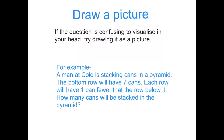The first thing we need to do is underline some words that you think will be useful. The man stacking cans at Coles — we don't care that he's at Coles. In a pyramid — good, so it should look like a pyramid. That's the first thing. The bottom row will have seven cans, so bottom row, seven cans. I've broken it down: there's a pyramid and the bottom row has seven cans. Each row will have one can fewer than the row below it — so the cans on top will have one can less. How many cans can be stacked in the pyramid?